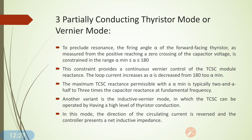To save the TCSC from the resonance condition, the firing angle alpha of the forward-facing thyristor, measured from the positive zero crossing of the capacitor voltage, is constrained in the range of alpha minimum to 180 degrees. This provides continuous vernier control of the TCSC module reactance. With a decrease in the value of alpha, the loop current increases. The maximum TCSC reactance at alpha minimum is typically two and a half to three times the capacitor reactance at fundamental frequency.